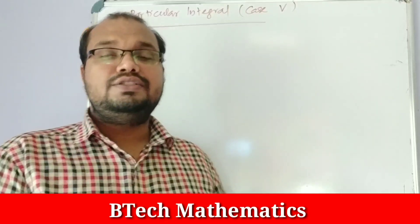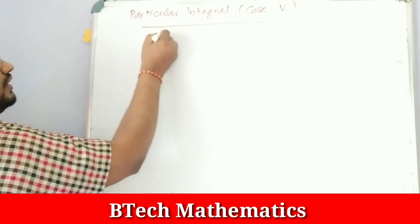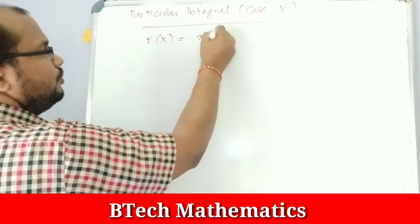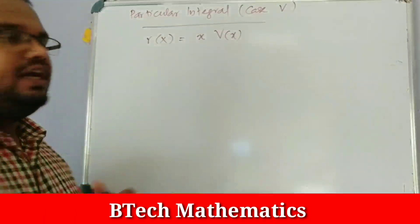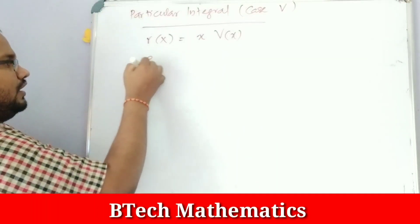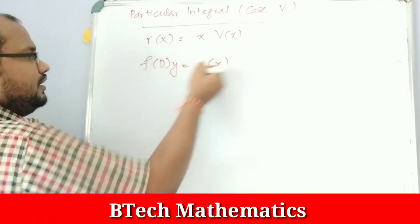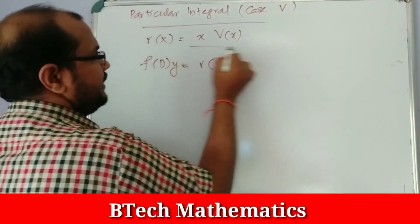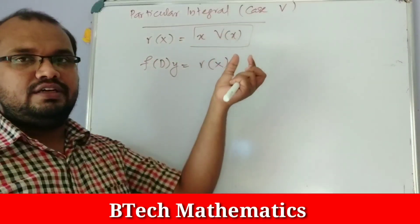Particular integral, Case 5. Here, R(x) will be of the form x·v(x) — that is, x into v(x). This applies to the non-homogeneous differential equation f(D)·y = R(x), where R(x) is x times a function of x.